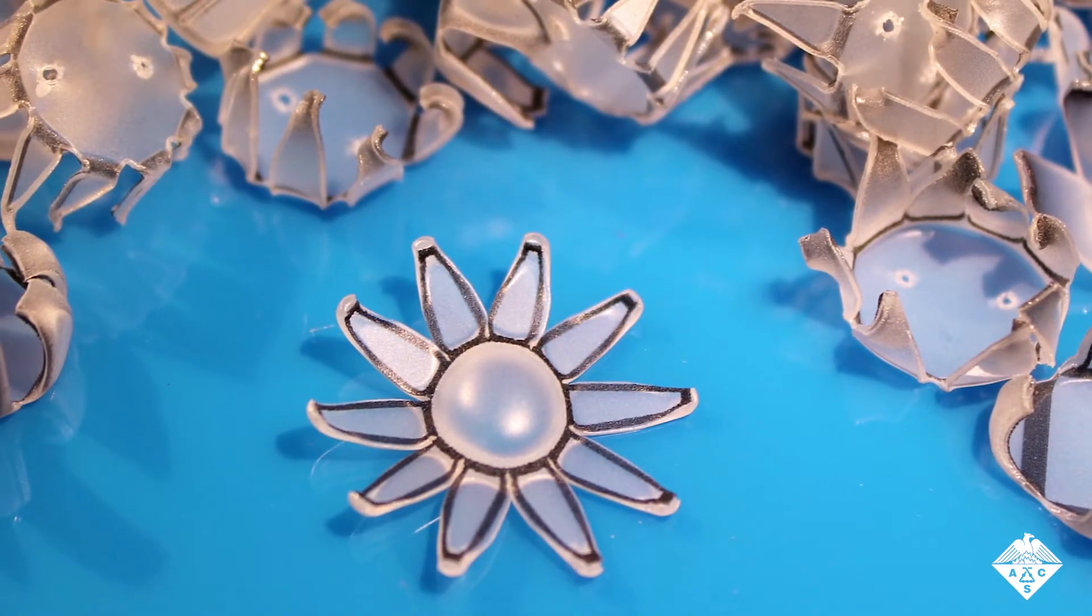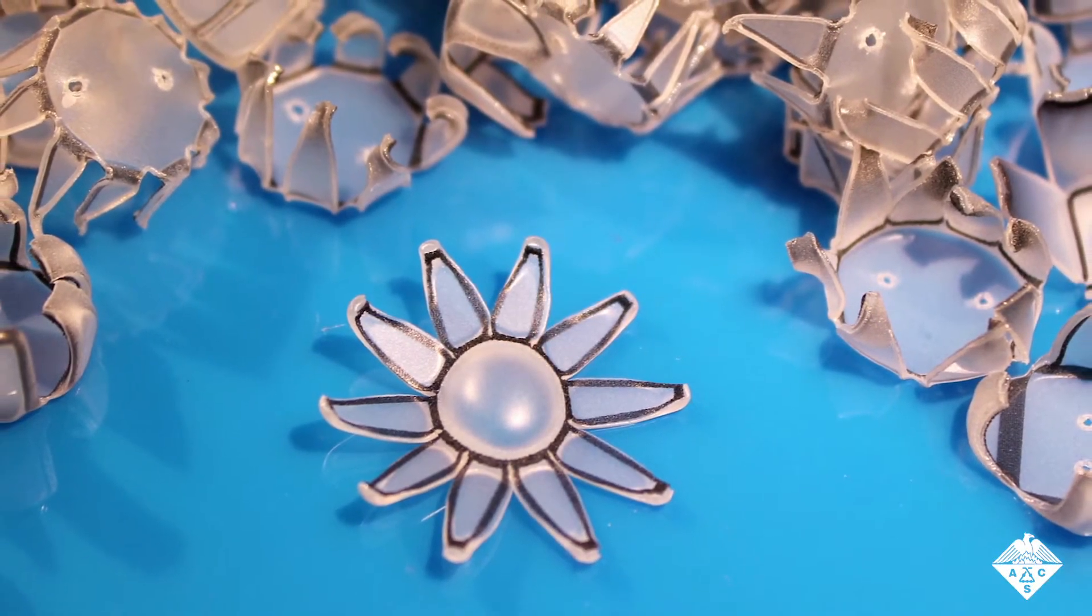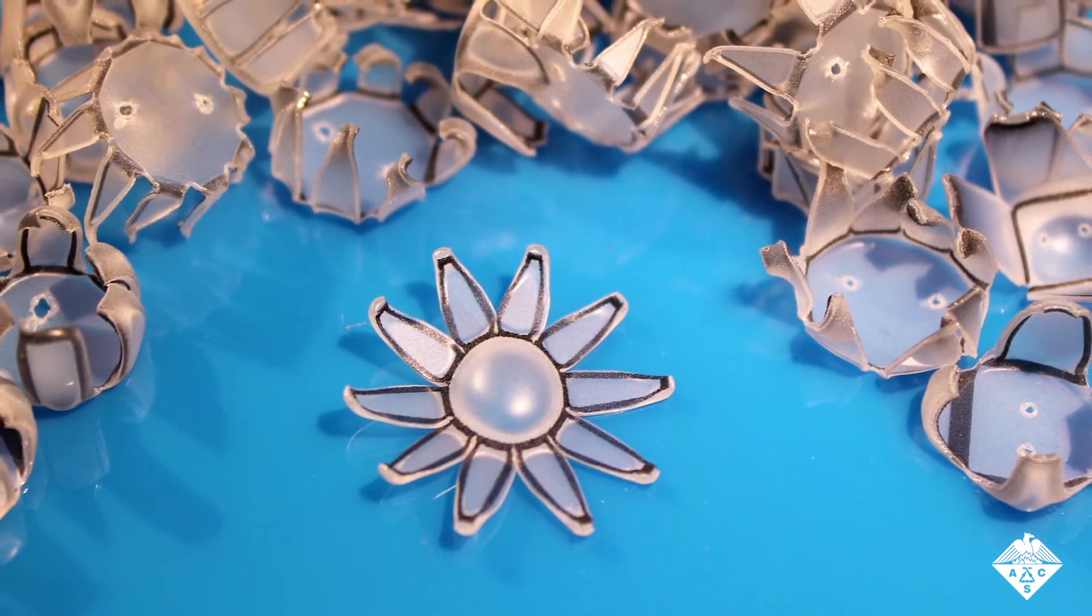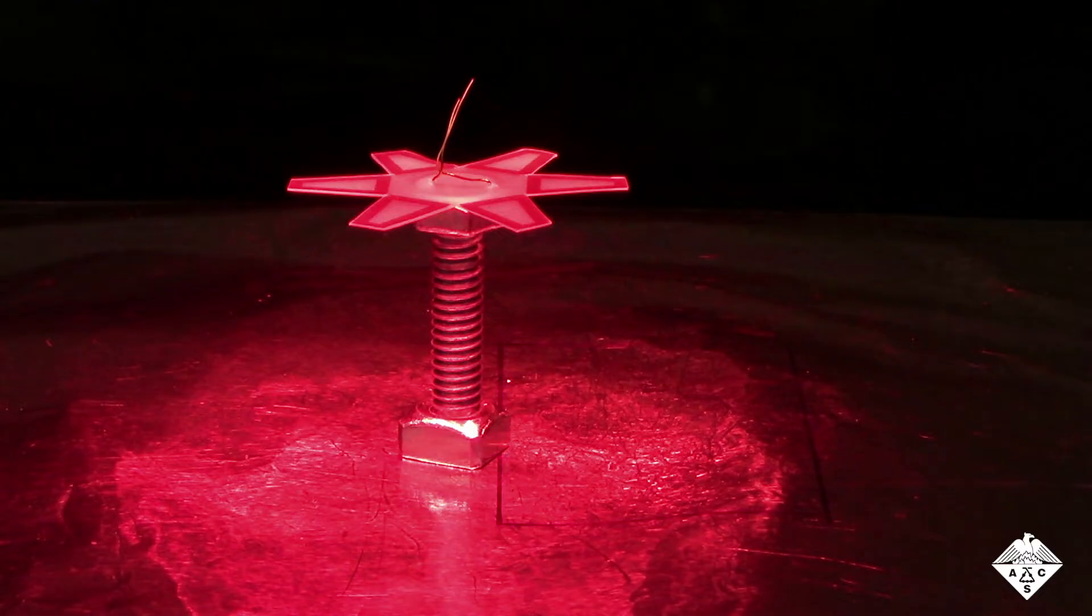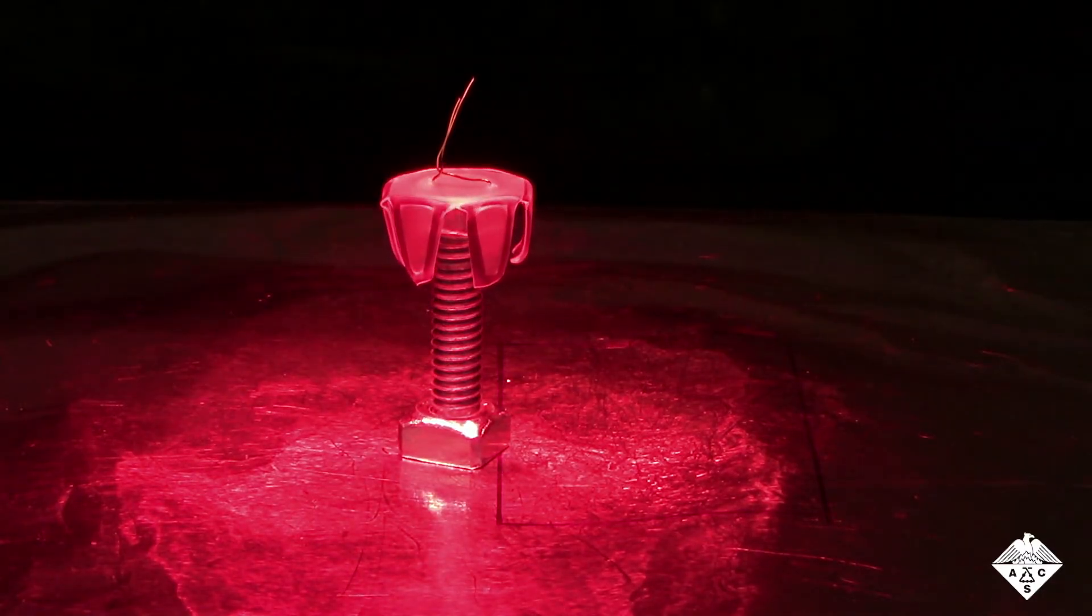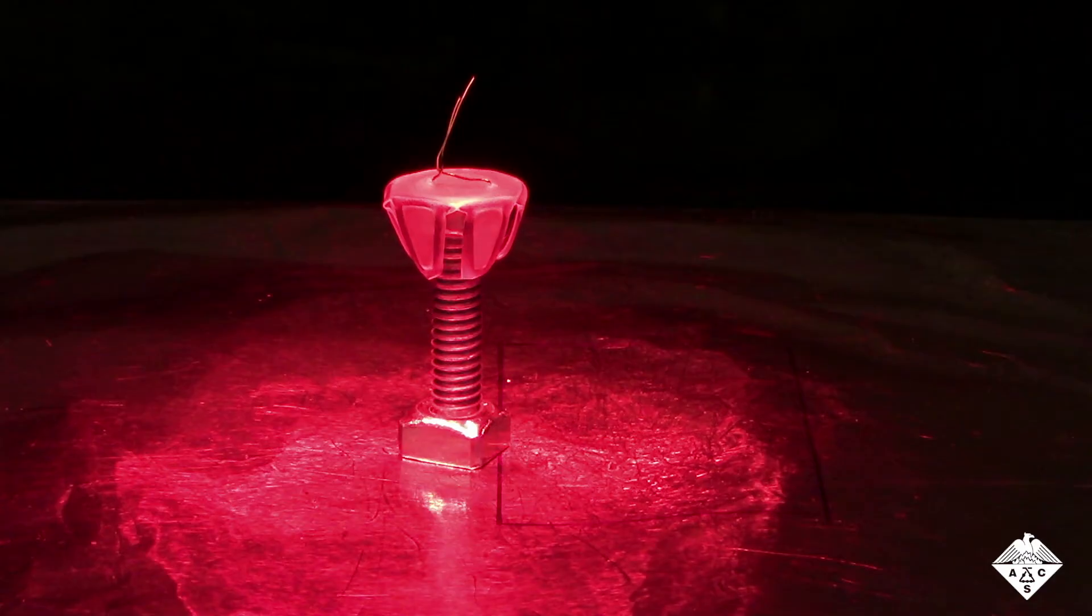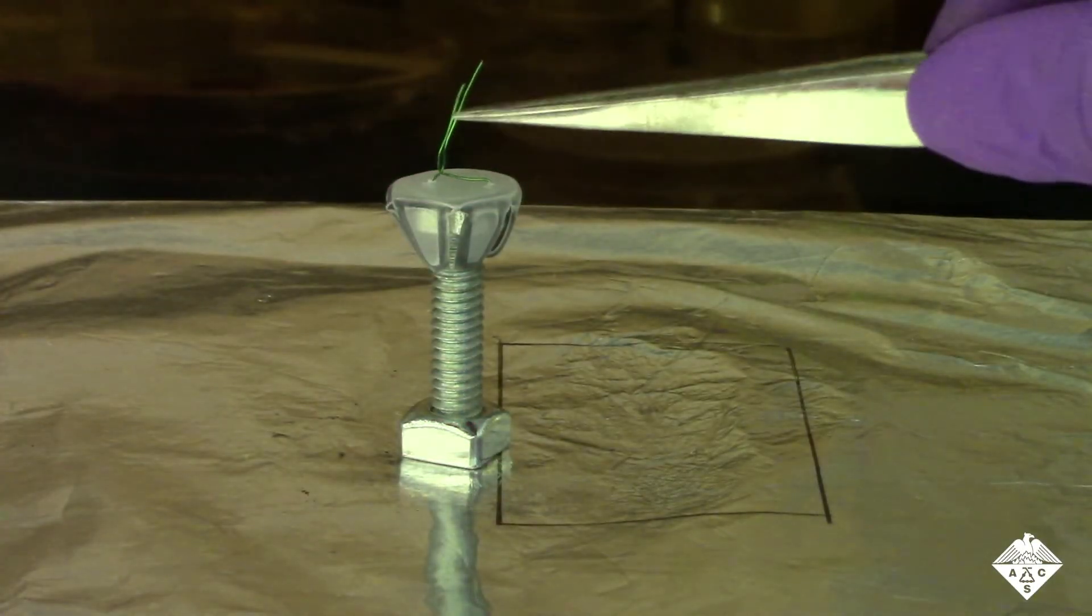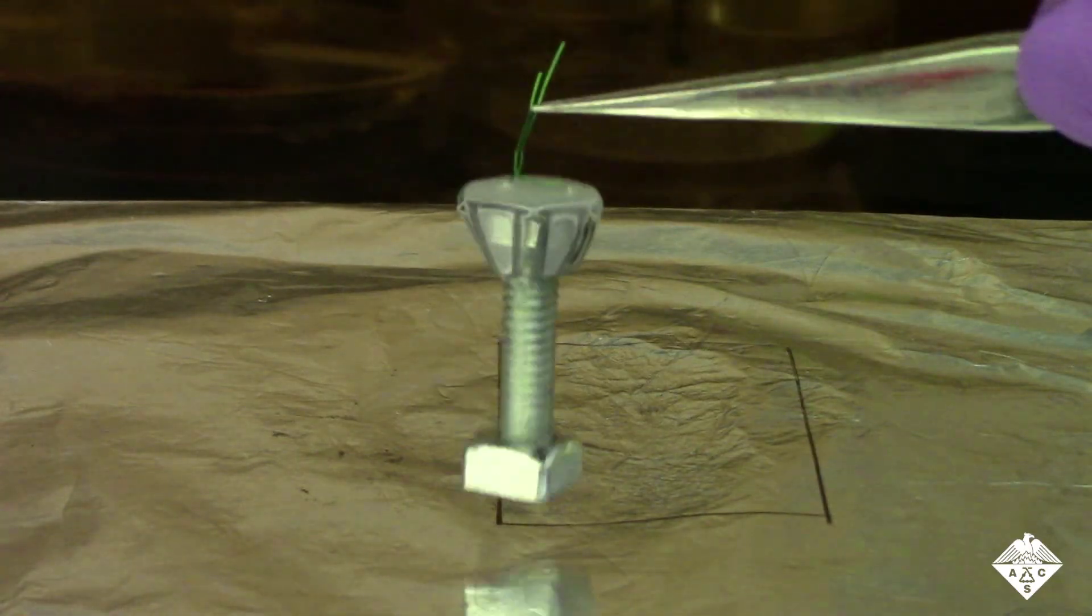To find out, the researchers used an inkjet printer to pattern black ink in various shapes onto the surface of polystyrene sheets. When the researchers shone an infrared light on the cut-out shapes, the inked regions warmed faster than the blank areas, causing the polystyrene to wrap around the object to be gripped, such as a hex bolt. Removing the light locked the gripper shape in place.